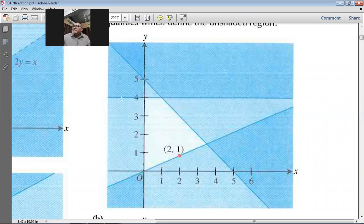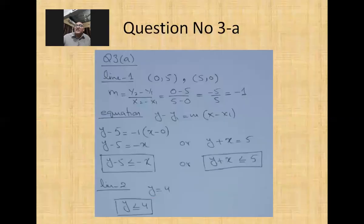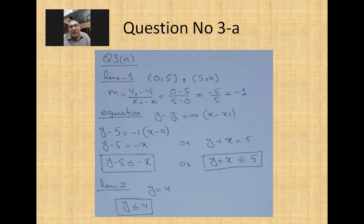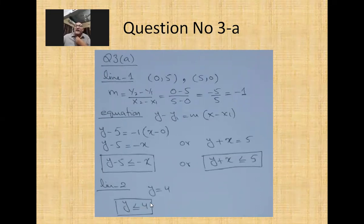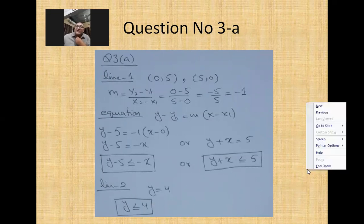Line number two is a horizontal line passing through y = 4. The white area is below this horizontal line, so the crocodile's back will be towards y — giving y ≤ 4.